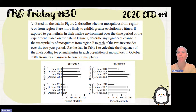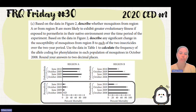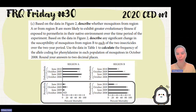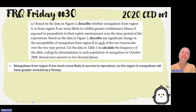Part C: based on the data in figure two, describe whether mosquitoes from region A or region B are more likely to exhibit greater evolutionary fitness if exposed to the chemical in their native environment. Fitness means they're more likely to survive and pass on that gene to their offspring. If I'm looking for survivability, I'm looking for a low percent mortality. In region A there's a low mortality, but in region B there's a high mortality. So mosquitoes from region A are more likely to survive and reproduce — region A mosquitoes will have greater evolutionary fitness.